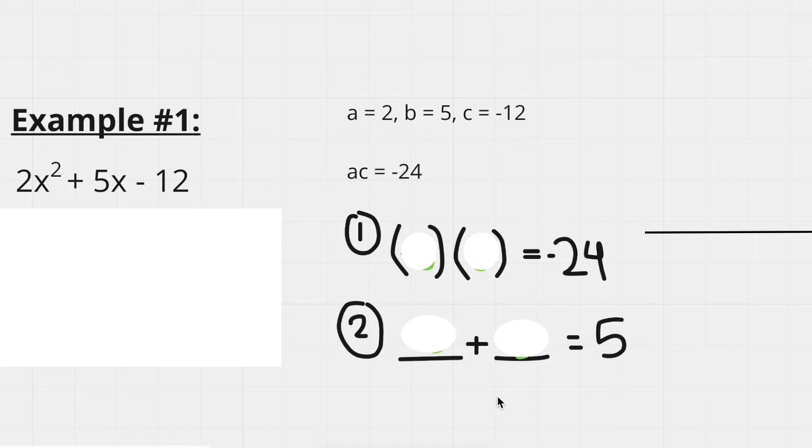So let's come up with two numbers that multiply to negative 24 and add to 5. Pause this video and try to figure it out on your own. When you think you're ready, come back.